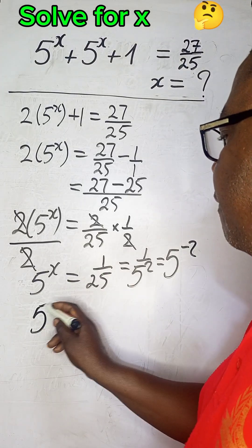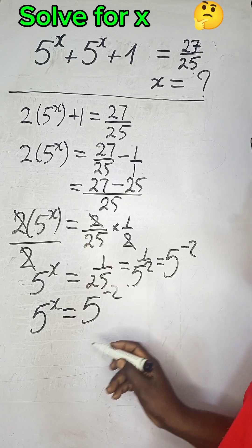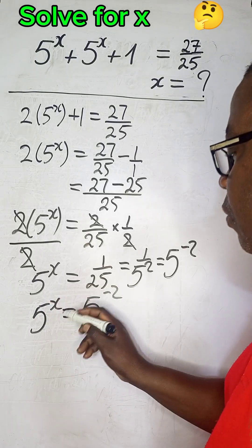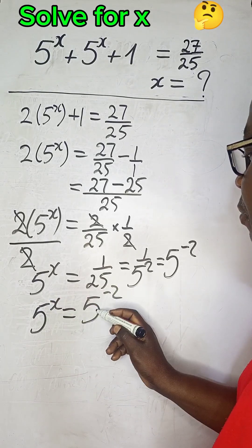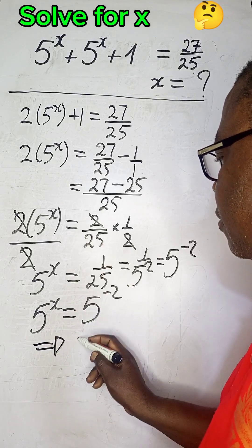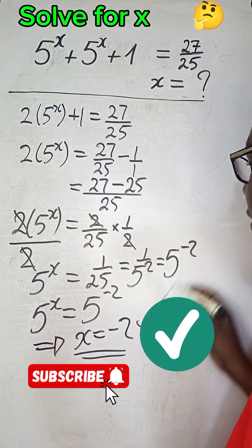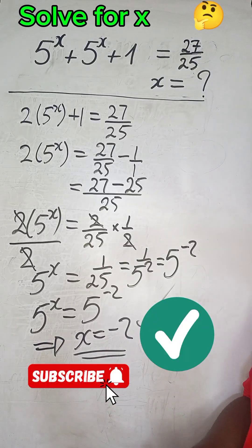We end up with 5^x = 5^(-2). For equality to be valid, the bases must be equal, and we see they are. The powers must also be equal. So, the value of x is negative 2. Thank you.